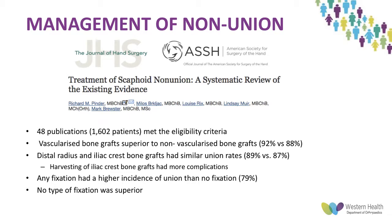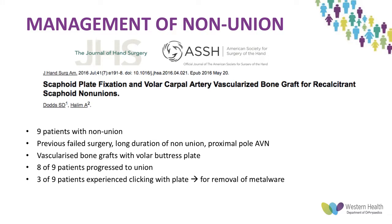A systematic review in the Journal of Hand Surgery looked at 48 publications with 1,600 patients and concluded that vascularized bone grafts were superior to non-vascularized bone grafts, achieving 92% progression to union. Distal radius and iliac crest bone grafts had similar union rates, but iliac crest harvesting had more complications — so distal radius is preferred when possible. Any fixation had a higher union rate than no fixation, but no specific type of fixation was superior.